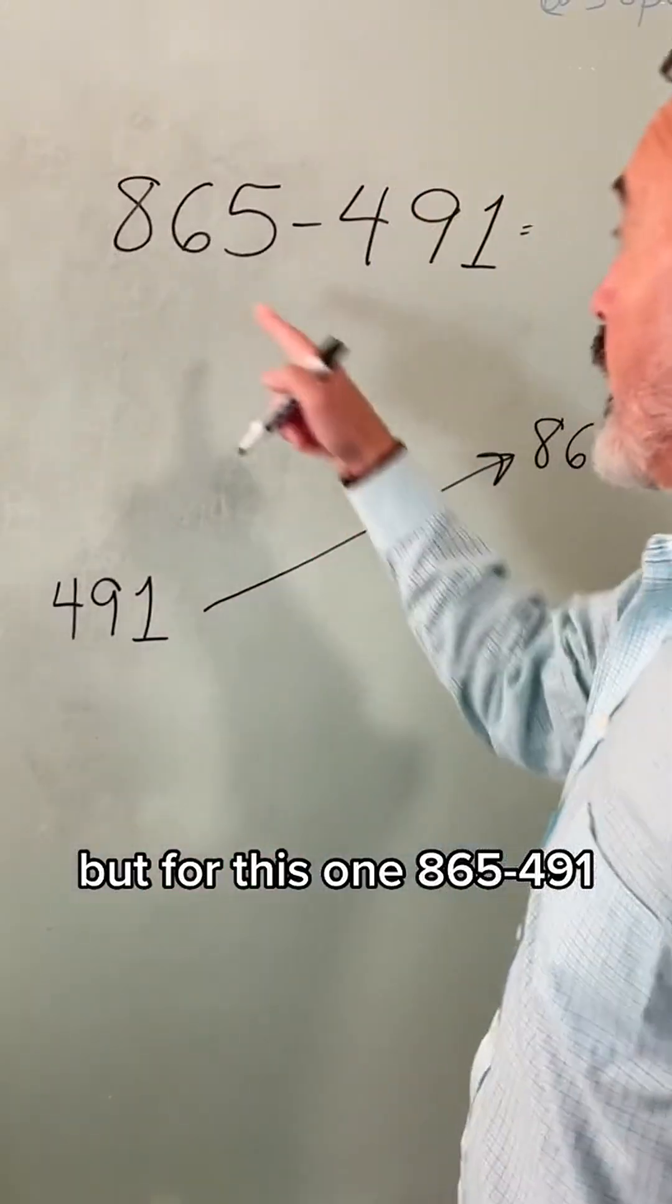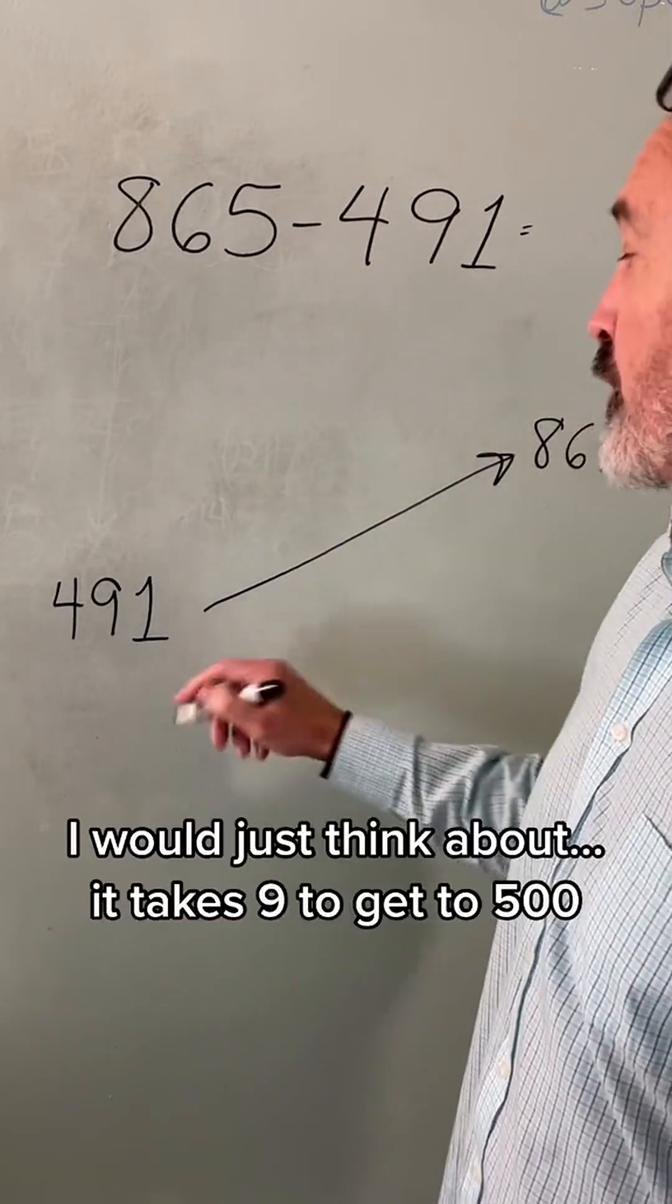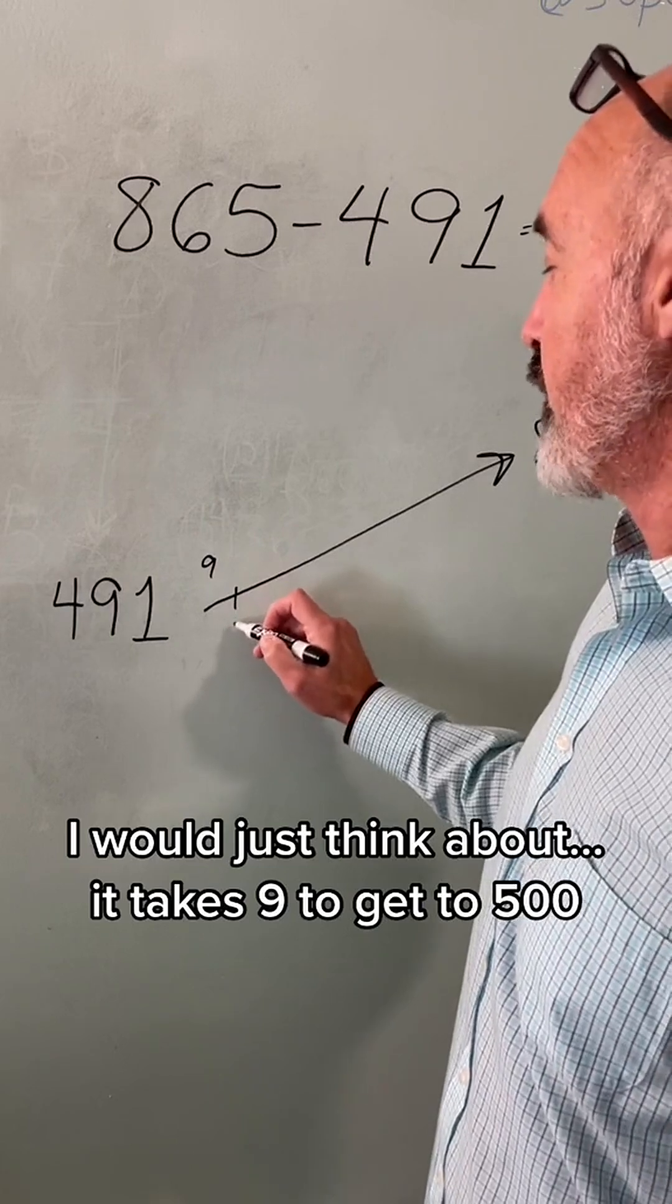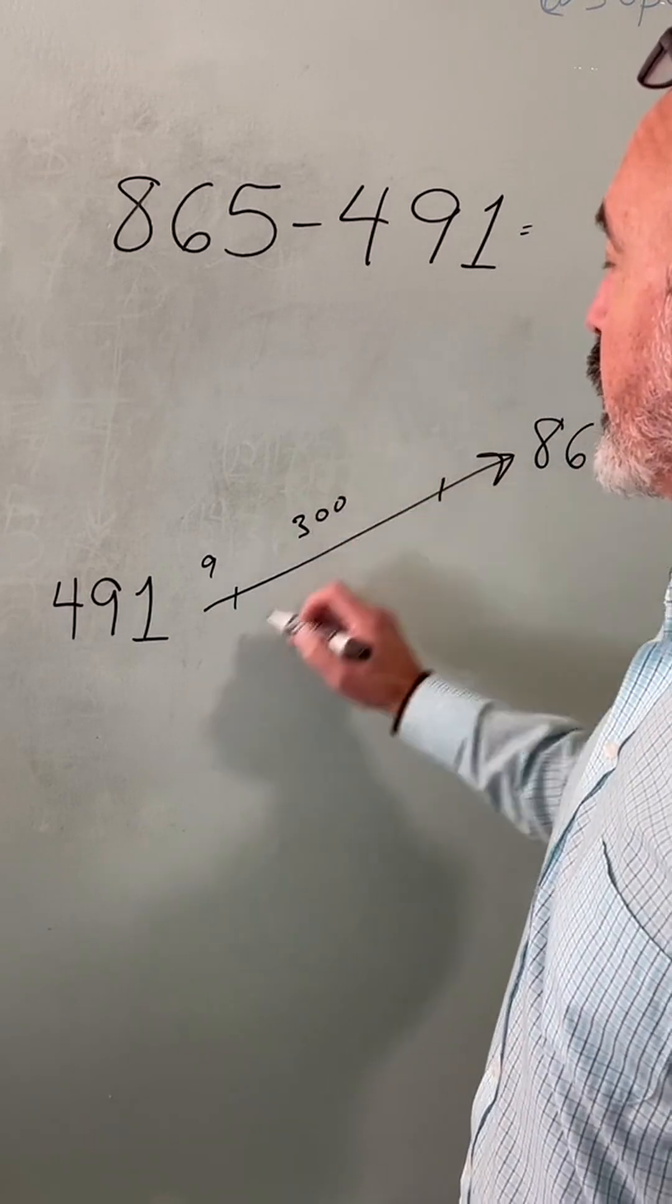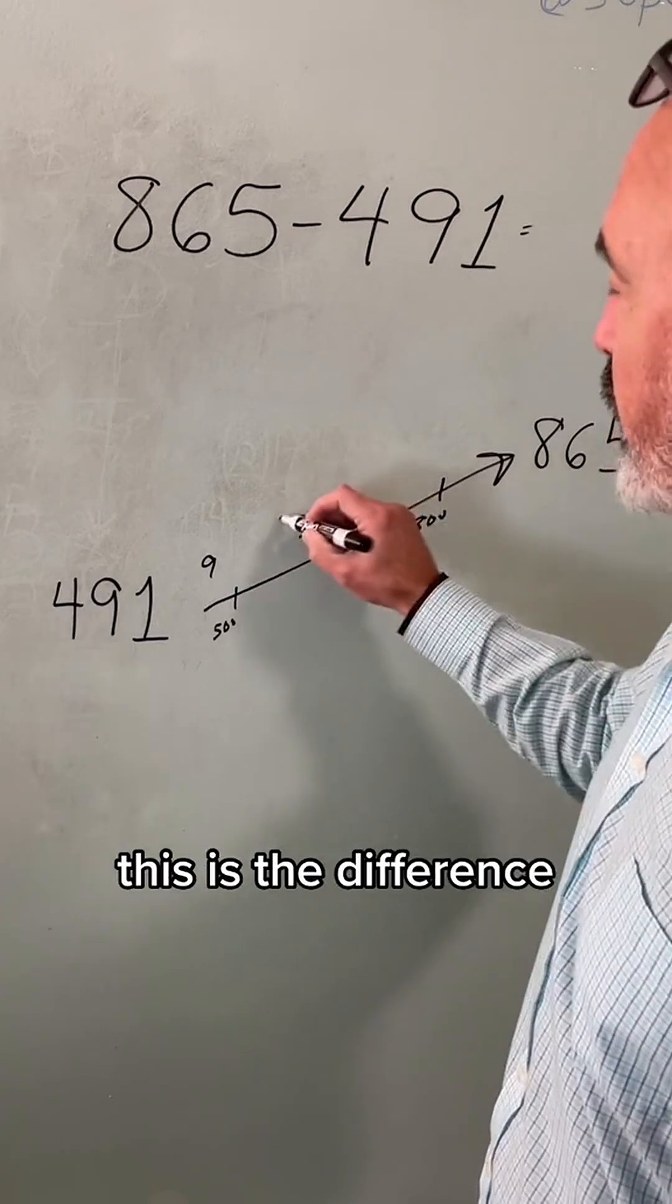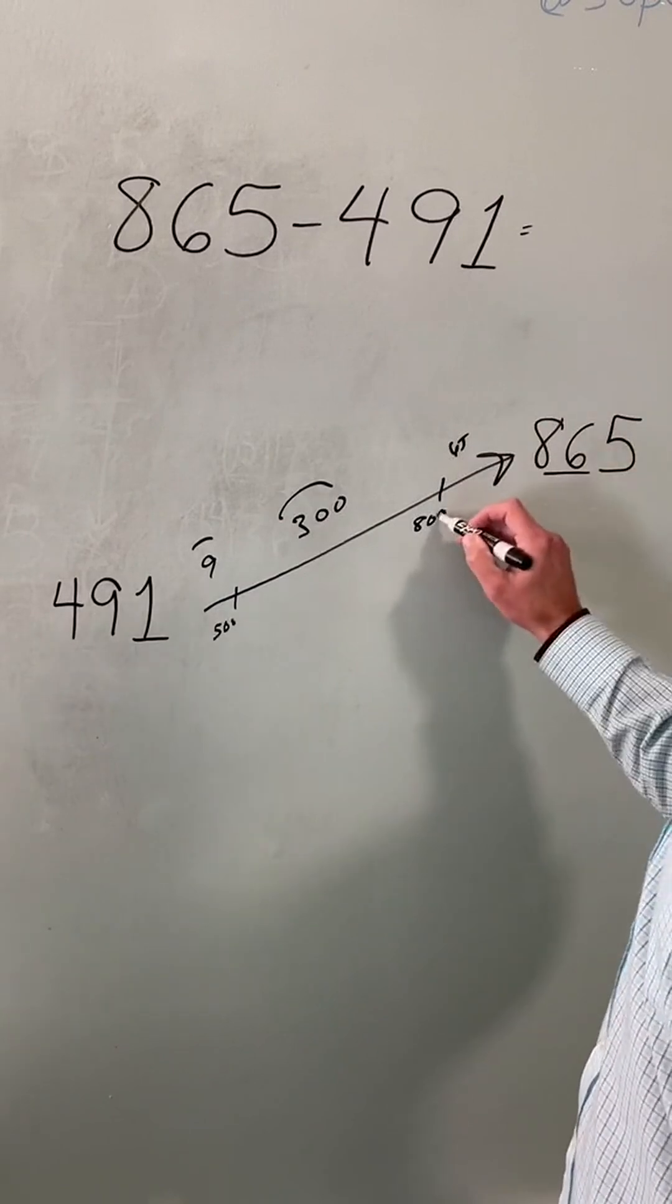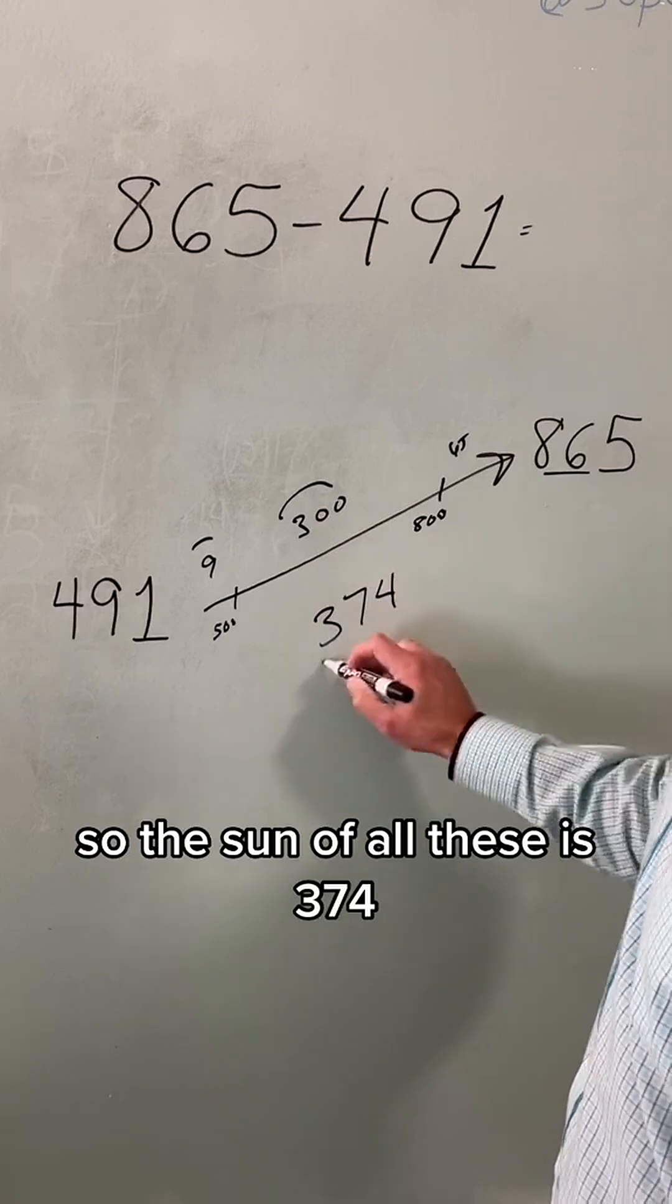But for this one, 865 minus 491, I would just think about it takes 9 to get to 500, and then it takes 300 more to get to 800. And then you're left with 65 more to get to 865. So the sum of all these is 374.